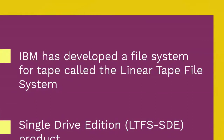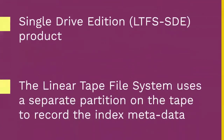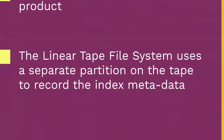The local tape catalog copy is usually discarded if not used for a specified period of time, at which point the tape must be re-scanned if it is to be used in the future. IBM has developed a file system for tape called the Linear Tape File System. The IBM implementation has been released as an open-source product known as LTFS-SDE. The Linear Tape File System uses a separate partition on the tape to record the index metadata, thereby avoiding the problems associated with scattering directory entries across the entire tape.